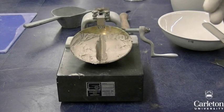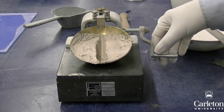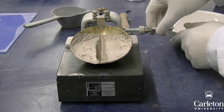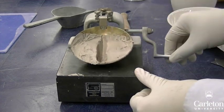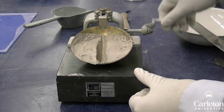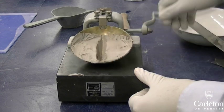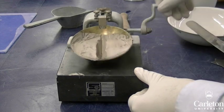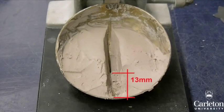Now that the Casagrande cup is set up, we can start the test. Turning this handle will cause the cup to rise to a height of about 1 cm and then drop to the base. Start turning the handle continuously, counting the number of drops. As the sample drops, the two halves of the sample will approach and eventually meet each other.